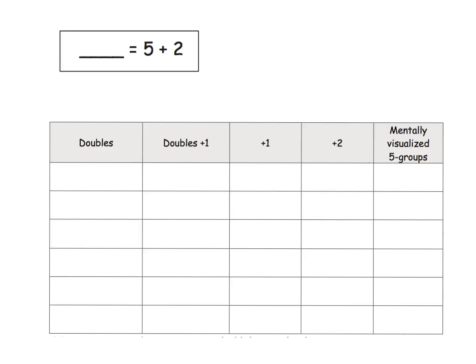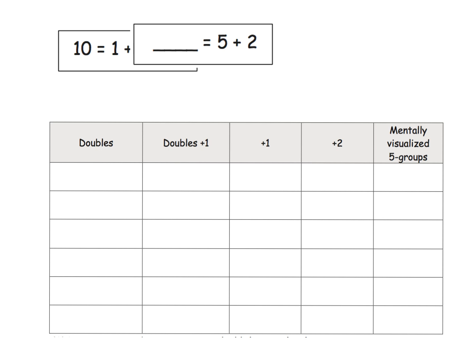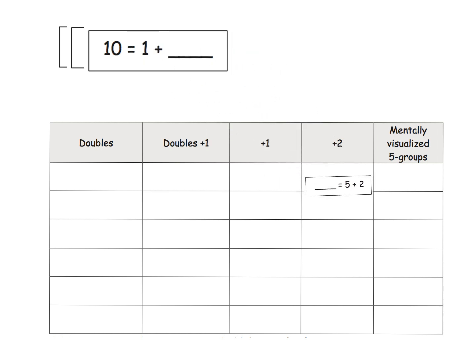We have a bunch of cards up here and our task is to sort them into this table. Some of these cards could go in multiple columns, and that's okay. Let students explore, experiment, and explain why they decided to put a particular number sentence in that column. I'm just going to model a couple of these.